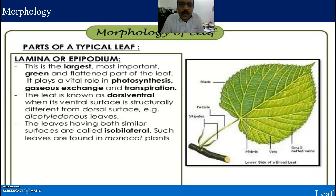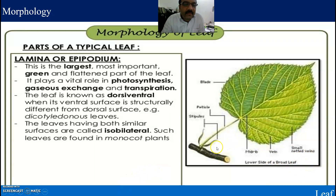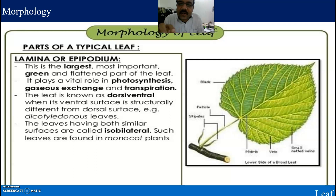The next part is the epipodium, also called the lamina. This is the largest, most important green and flattened part of the leaf. It plays a vital role in photosynthesis, gaseous exchange, and transpiration. The leaf is known as dorsiventral when the ventral surface is structurally different from the dorsal surface — for example, in dicotyledon leaves. Leaves having both similar surfaces are called isobilateral, and such leaves are found in monocot plants.